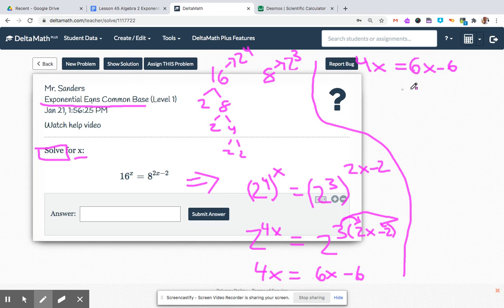I like to keep x positive, but in this case it's more work to do that, so I'm just going to minus 6x to both sides. Negative 2x equals negative 6. Divide by negative 2, x equals 3.